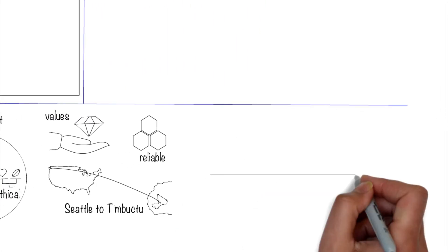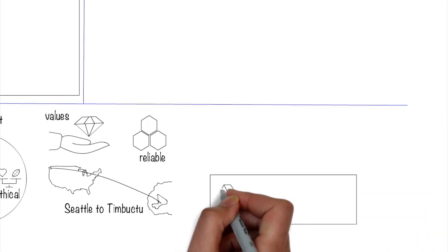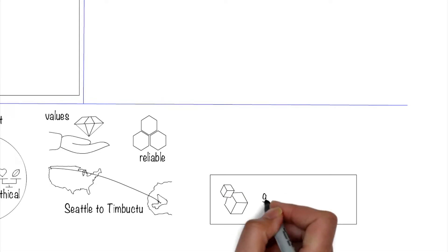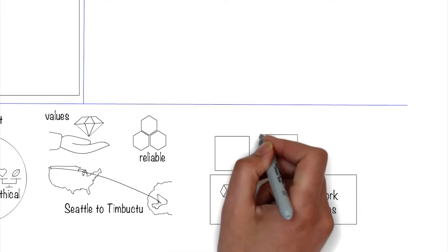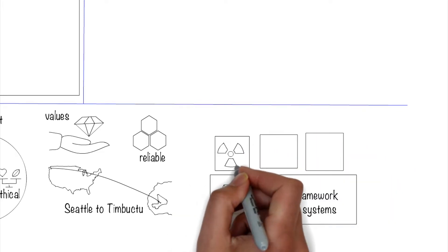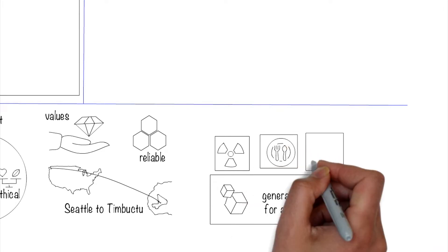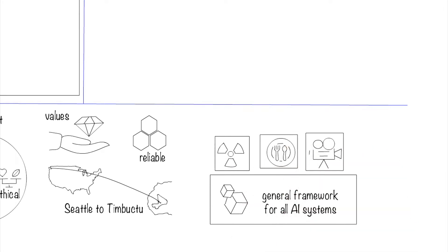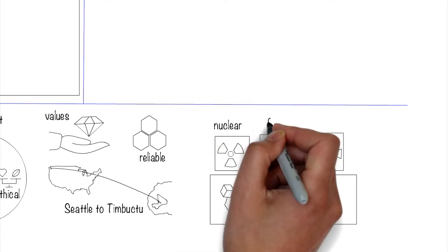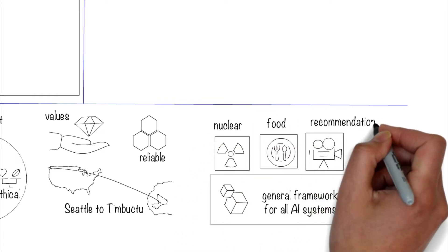We will need a general framework that's applicable across all kinds of models, and then we can fine-tune them based on the context. For example, when it comes to either food safety or nuclear environments, we require the systems to be more trustworthy than, for example, when the system is used for movie recommendations.